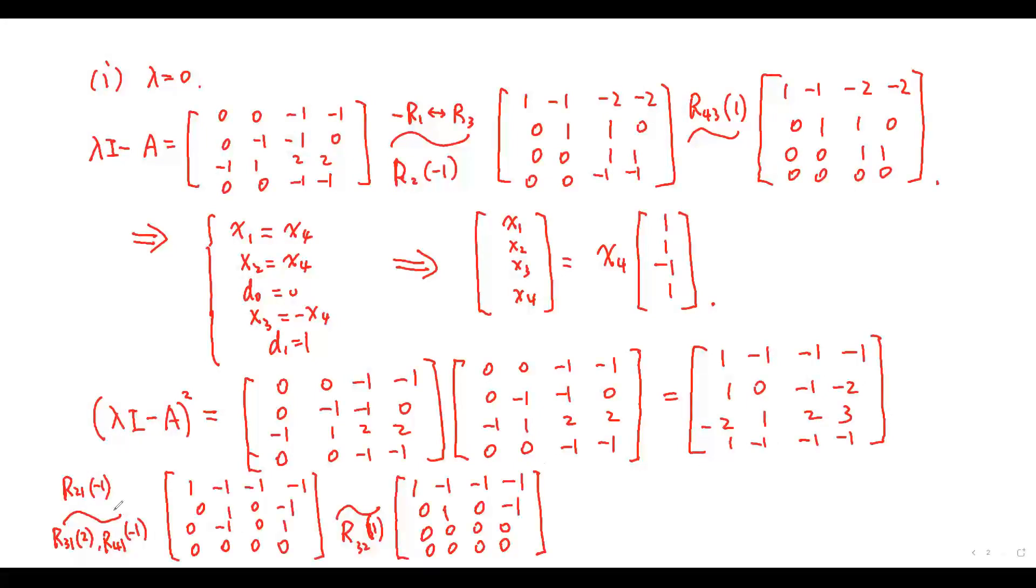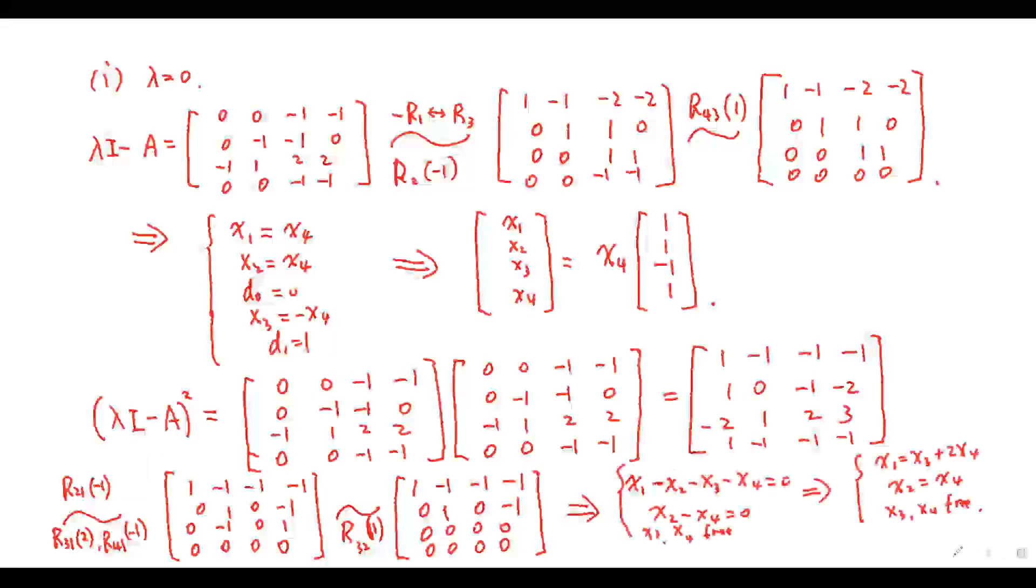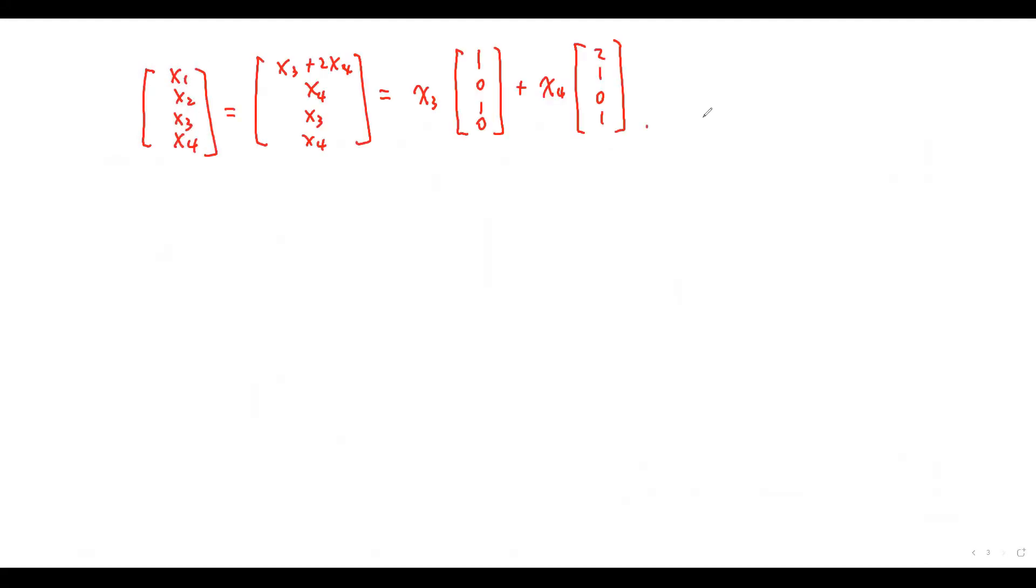By row operations, we can get this matrix. And from this matrix, we get the eigenvector X1, X2, X3, X4 equals, and we have that.